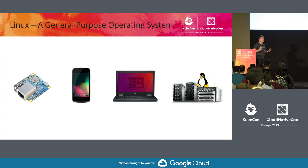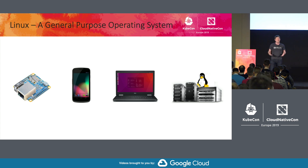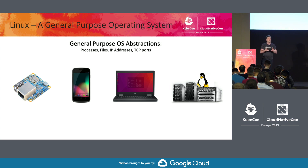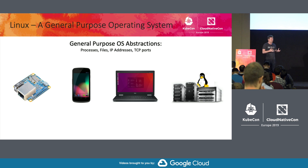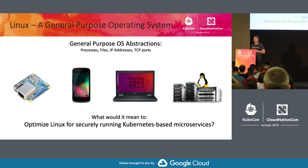Linux is what we call a general purpose operating system. It can run on everything from a tiny Raspberry Pi to your phone, laptop, or servers — and now most of our Linux instances are running in the cloud. But if you think about the core abstractions most of your applications use, they're general purpose operating abstractions that have existed since the 70s and 80s: things like processes, files, IP addresses, TCP, IP ports. That makes sense if you can make no assumptions about the type of workload running on top of your OS. But the question is: if we're running microservices applications on Kubernetes, what could we do inside Linux to make those applications dramatically more secure?